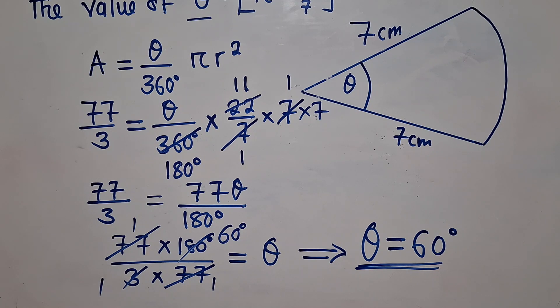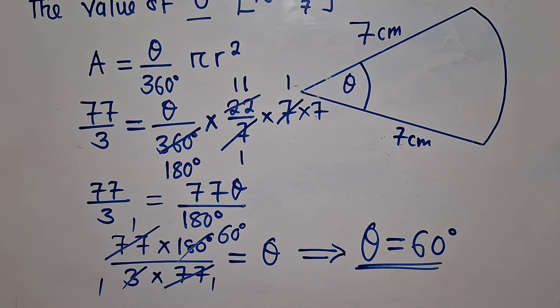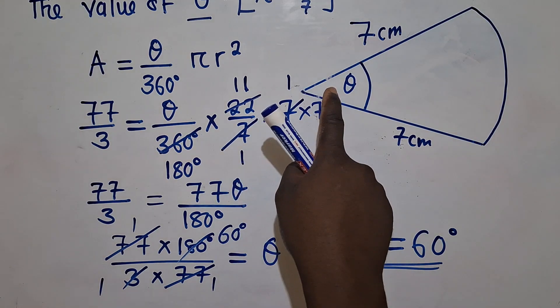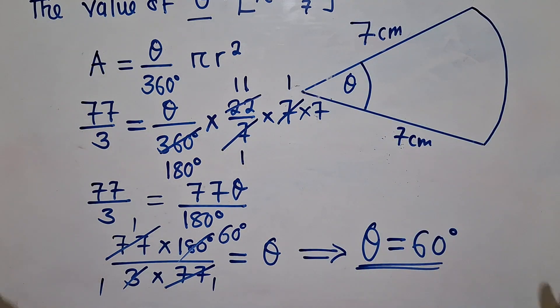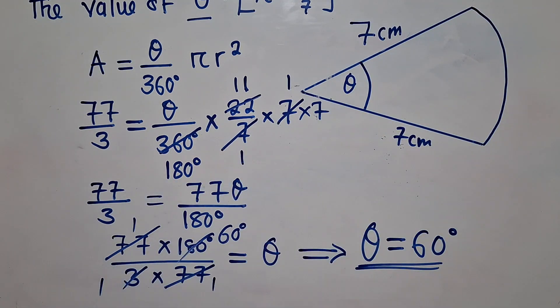This is one of the key topics in paper 1. You are always going to be asked a question of this nature where you need to find either area or angle or radius. So in this case they gave us area and they want us to find the value of theta, and these are the steps that you need to follow.